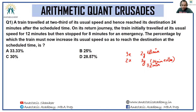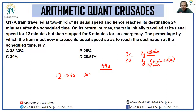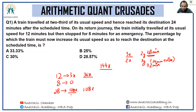On the return journey, the train initially traveled at its usual speed of 3x for 12 minutes, covering 36x distance. Total distance is 144x. Then it stopped for 8 minutes on an emergency, so 0 distance covered. Out of 48 minutes total, 20 minutes are gone, leaving 28 minutes to cover the remaining 108x distance.